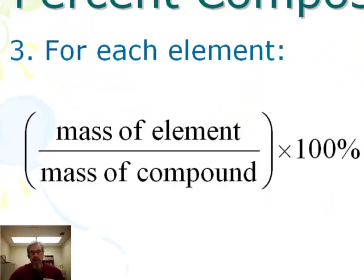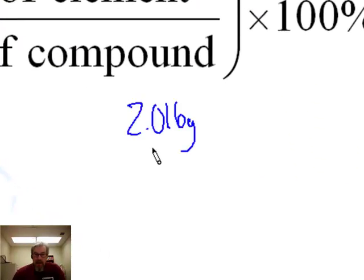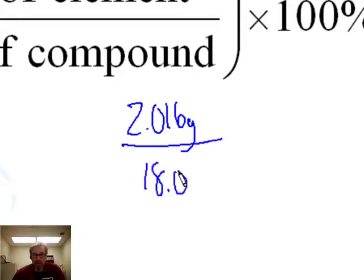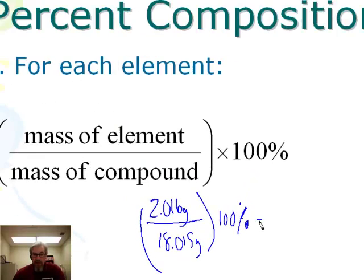The third step is to take each element's mass, divide it by the whole mass of the compound. For hydrogen, that's 2.016 grams divided by 18.015 grams. Then to express this as a percent, multiply by 100 and change the unit to a percent.